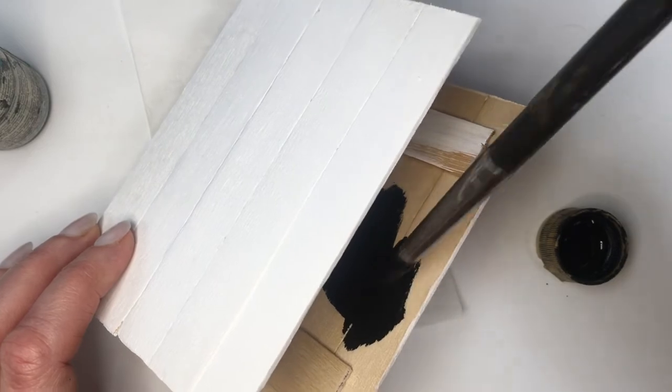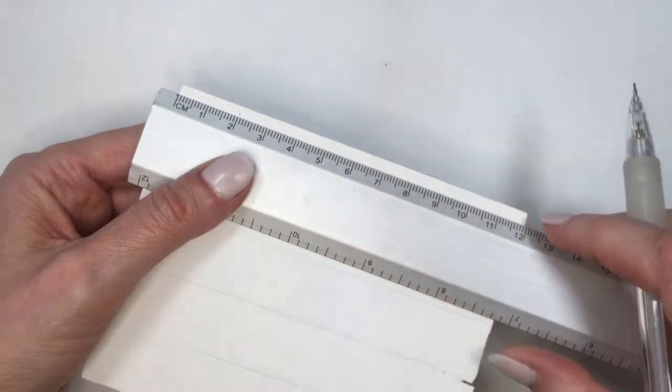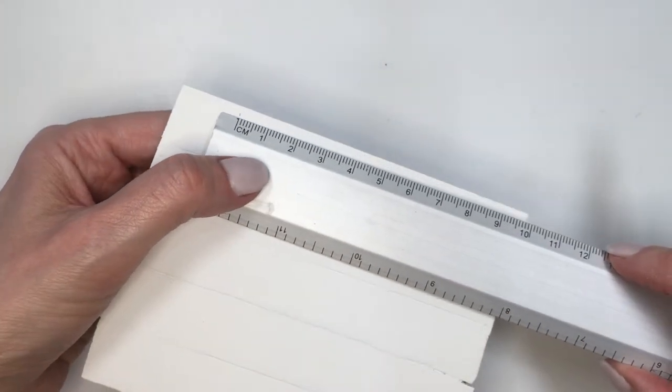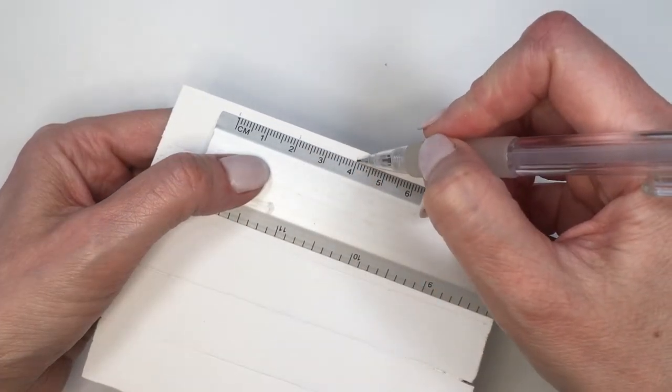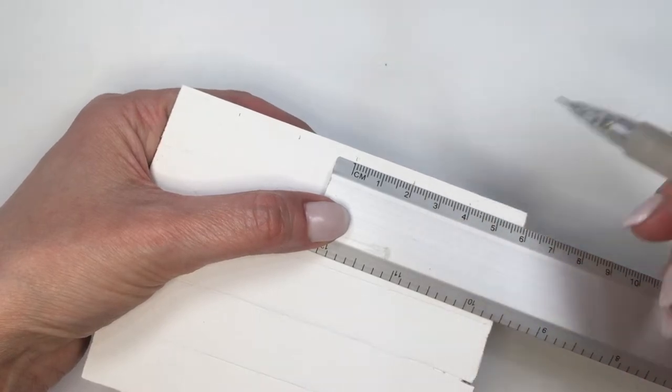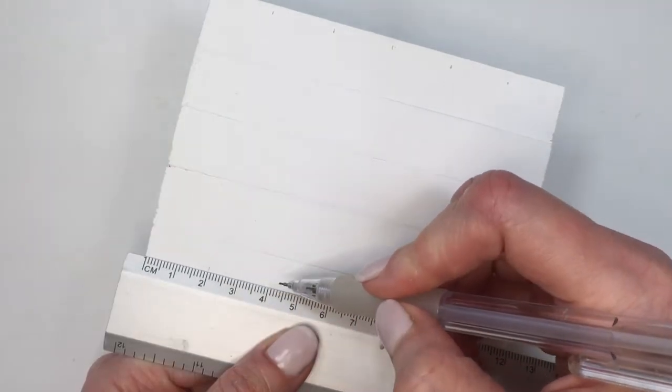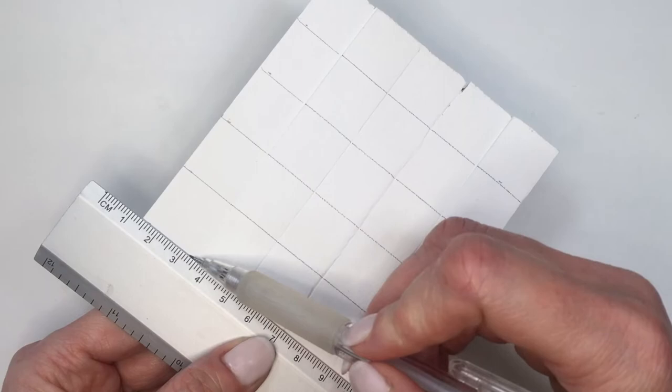And then here comes the fun part, and this is actually the reason why I chose to work with craft sticks, because they are two centimeters wide, at least mine are. I'm just going to be making squares with that same measurement. To make the squares, I'm going to be marking two centimeters all across them. I'm going to be doing the same thing on the bottom part, and then just connecting those marks with my ruler.